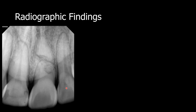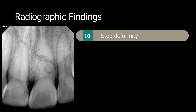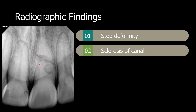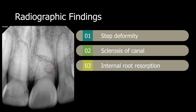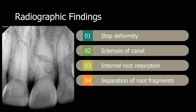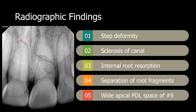So what are the radiographic features we saw? We saw a step deformity. We saw sclerosis of the pulp canal. We also saw what appears to be internal or external root resorption. We saw separation of the root fragments. And then we saw a widened apical PDL space of the right central incisor.